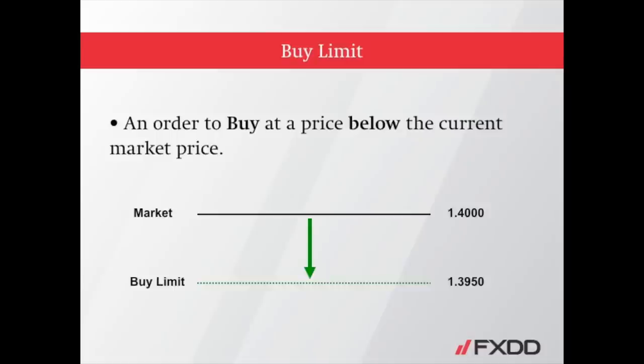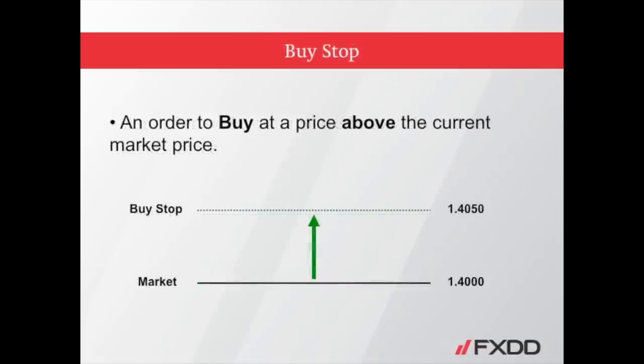This would imply that you're speculating that the market would rebound upward after the order is triggered. A buy stop order is a pending order you place when you wish to buy at a price above the current market price. As an example, if the EURUSD is currently trading at 1.40 ask and you wish to buy only if it rises to 1.4050, you may consider setting a buy stop order at 1.4050. This would imply that you're speculating that the market would keep moving upward after the order is triggered.